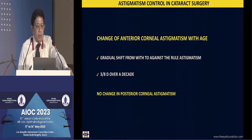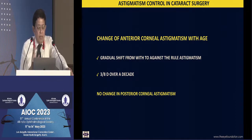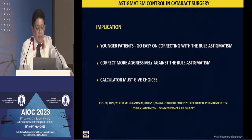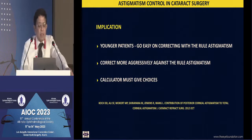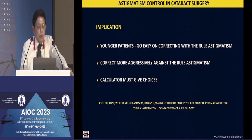The anterior corneal astigmatism is not stable throughout the patient's lifetime. The posterior corneal astigmatism does not change, but the anterior changes by about three-eighths of a diopter per decade. That is exactly why most laser refractive patients — who are younger — have with-the-rule astigmatism, while most cataract-age patients have against-the-rule astigmatism. The implication is that for a younger patient with with-the-rule astigmatism, even 1.5 diopters, you would not consider a toric IOL in a pediatric cataract because this astigmatism will go away on its own during the patient's lifetime.